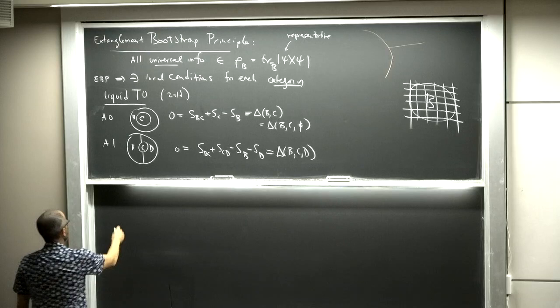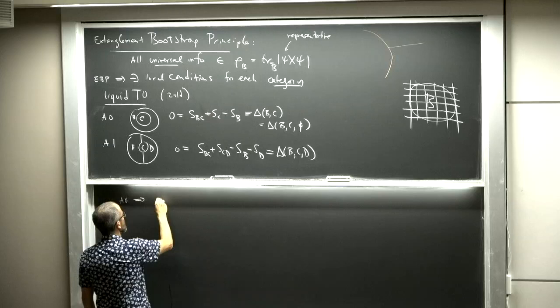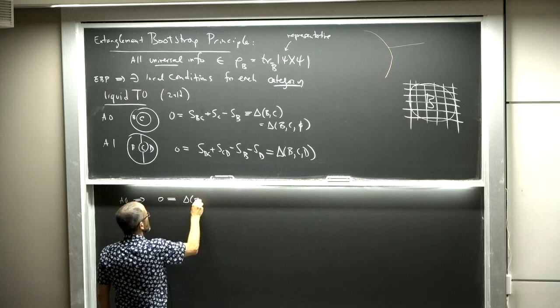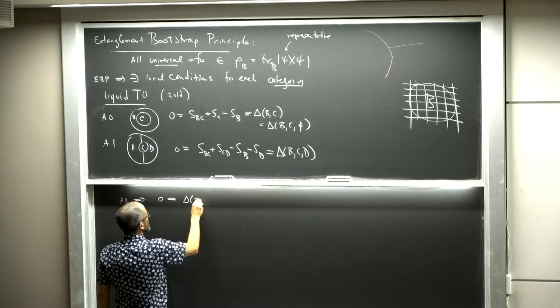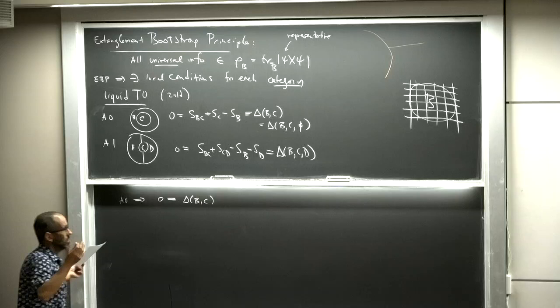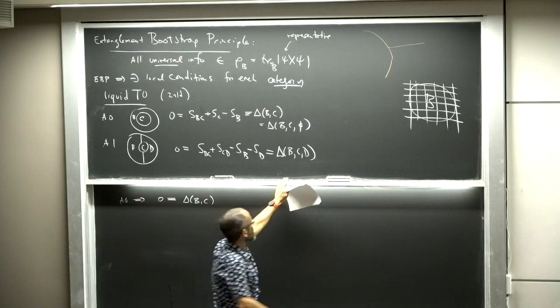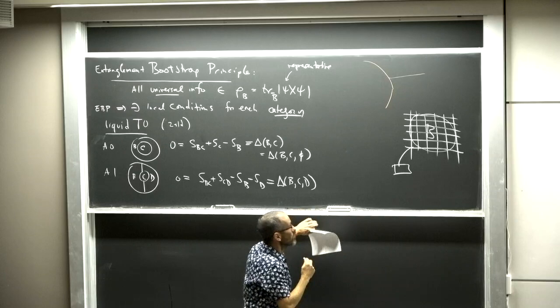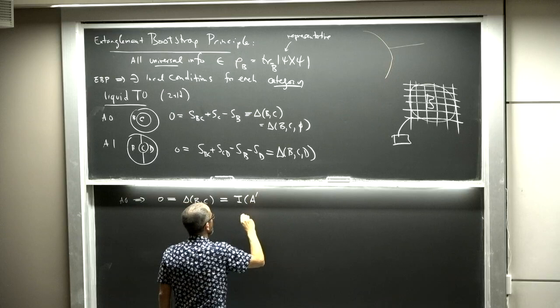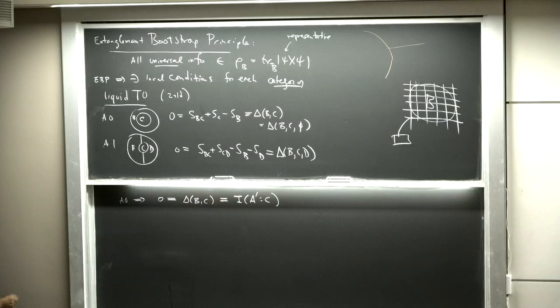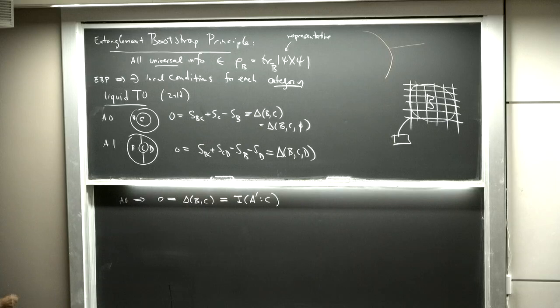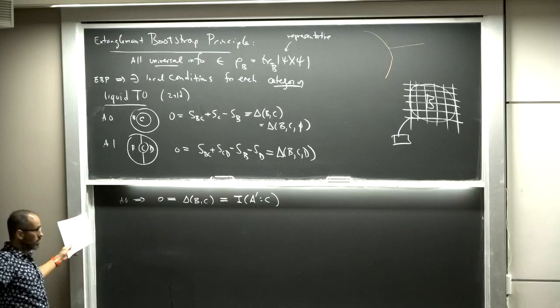Let's think about what A0 implies. A key trick we'll use over and over: if we purify our state, so this disk BC appears somewhere and has a complement, I attach some extra degrees of freedom to make a pure state. Call A' everything in the world except B and C — the complement of this little disk BC in the whole pure state. In a pure state the entanglement entropy of a region equals the entanglement entropy of its complement.